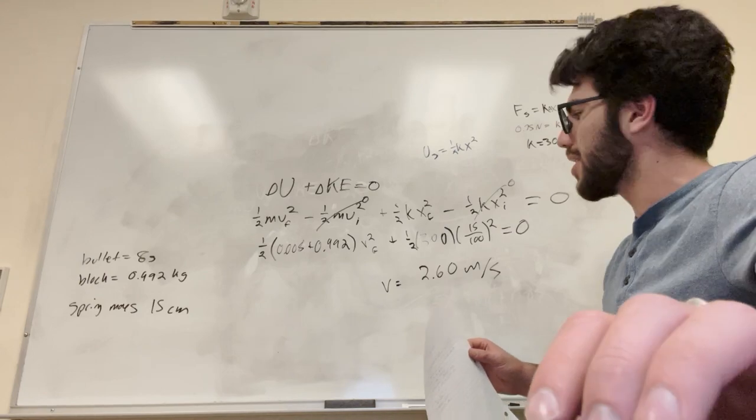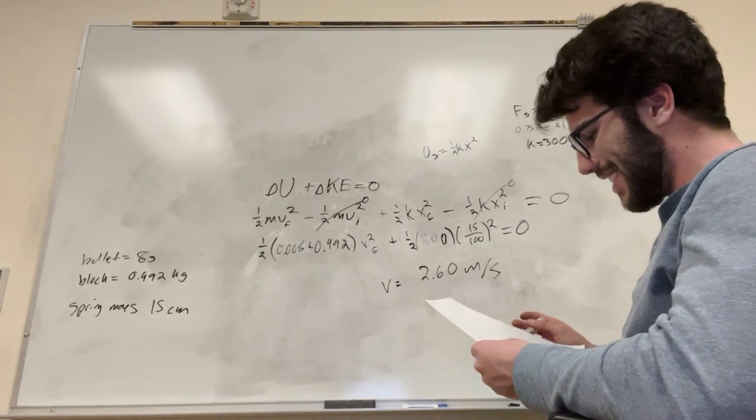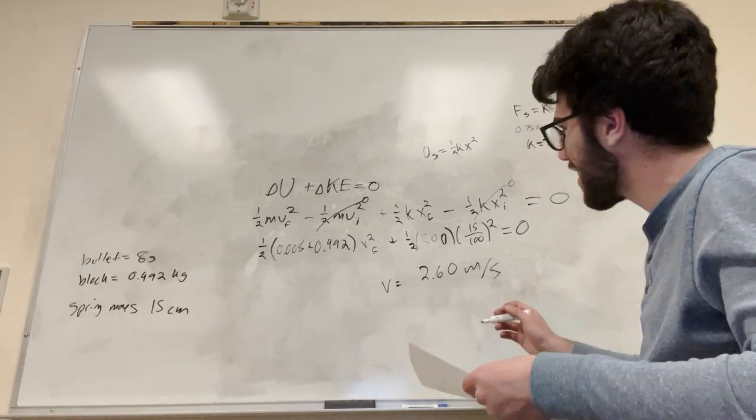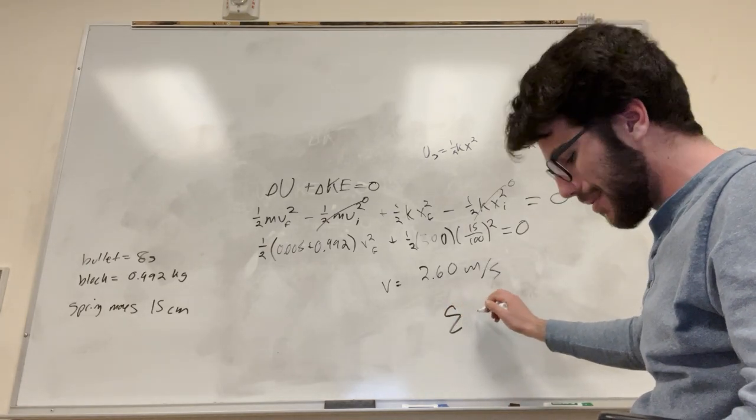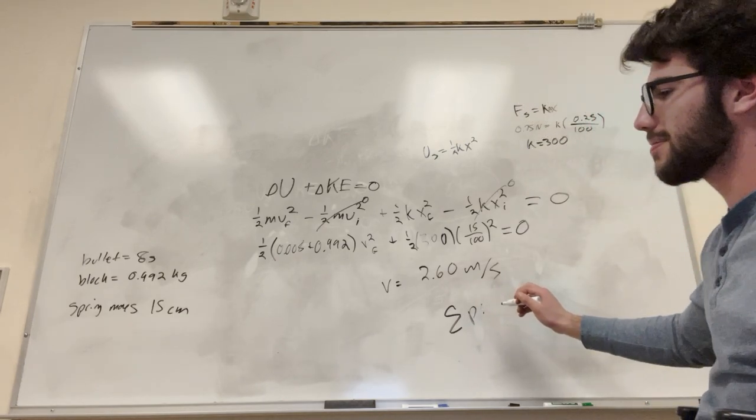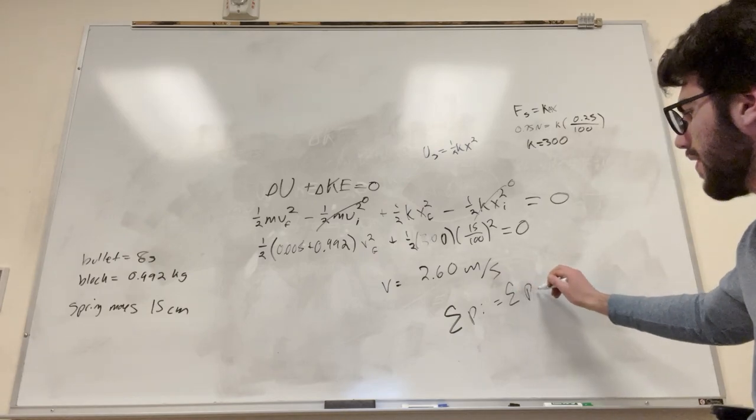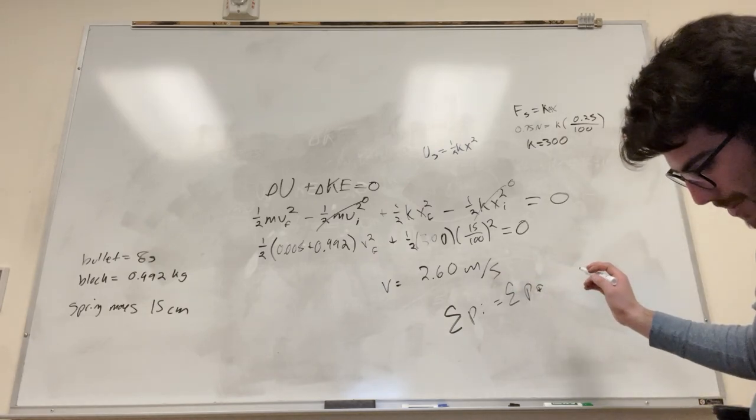And then what's the initial speed of the bullet? Okay, same thing again. It's not the same thing but the same thing I saw a student earlier. The initial momentum is going to be equal to the final momentum, right? The momentum is conserved. Momentum is equal to mass times velocity.